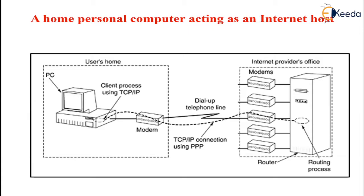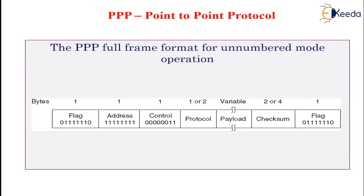The only widely used protocol in the internet is called point-to-point protocol. The internet needs a point-to-point protocol for a variety of purposes including router-to-router traffic and home user-to-ISP traffic. PPP handles error detection, supports multiple protocols, allows IP addresses to be negotiated at connection time, permits authentication, and has many other features.